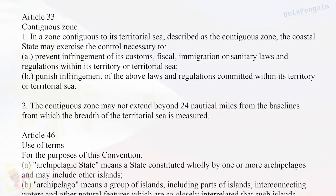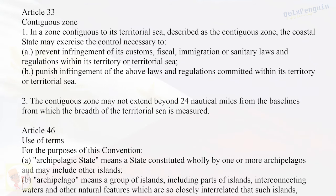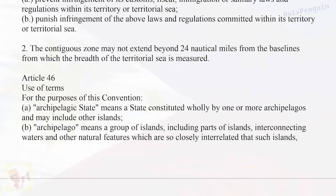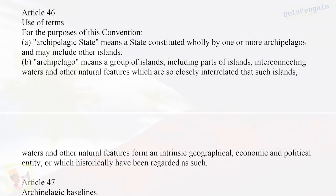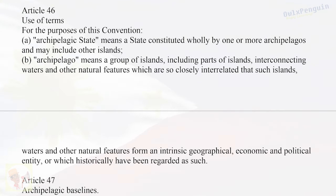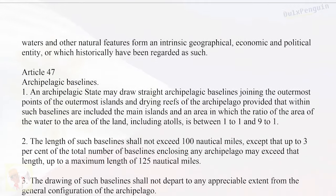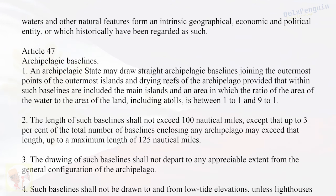Article 33 — Contiguous Zone: In a zone contiguous to its territorial sea, the coastal state may exercise the control necessary to: (a) prevent infringement of its customs, fiscal, immigration, or sanitary laws and regulations within its territory or territorial sea; and (b) punish infringement of the above laws committed within its territory or territorial sea. The contiguous zone may not extend beyond 24 nautical miles from the baselines. Article 46 — Use of Terms: 'Archipelagic state' means a state constituted wholly by one or more archipelagos. 'Archipelago' means a group of islands, including parts of islands, interconnecting waters, and other natural features which are so closely interrelated that such islands, waters, and other natural features form an intrinsic geographical, economic, and political entity or which historically have been regarded as such.